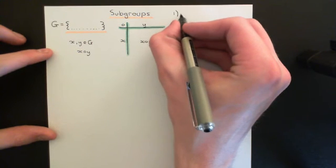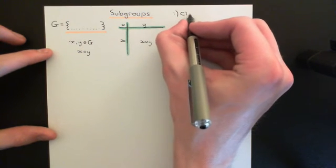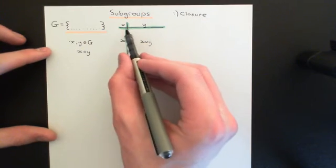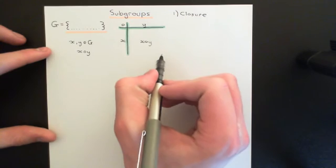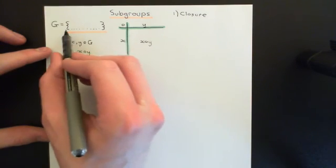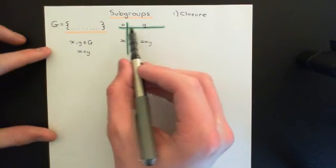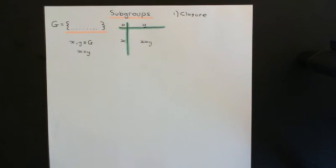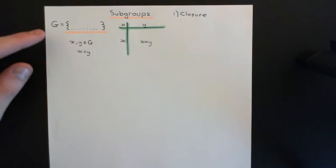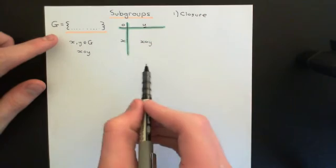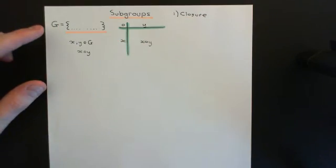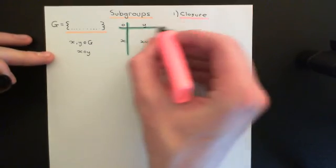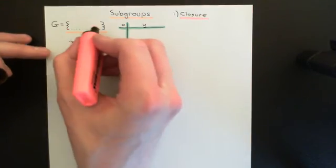Axiom number one is the most easy to understand. This is closure. What this says is that all of the answers in the composition table have to be another element of our original set. You can't compose two elements of the group together and get something outside of the group — you can't get a symbol that wasn't in your original set. The answers to the composition have to be back within your group. That's what closure means.